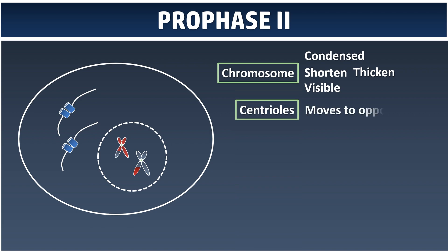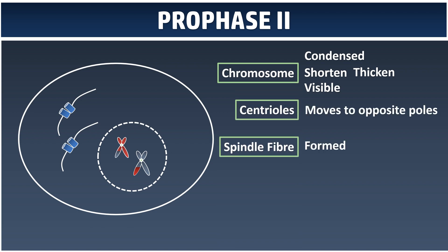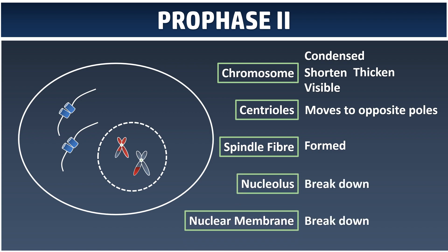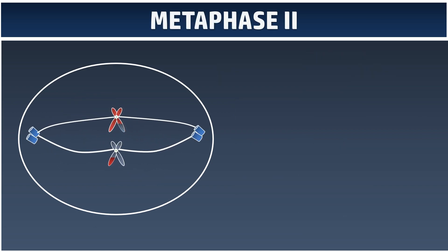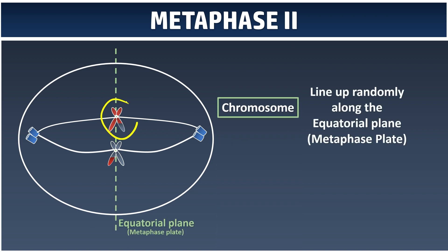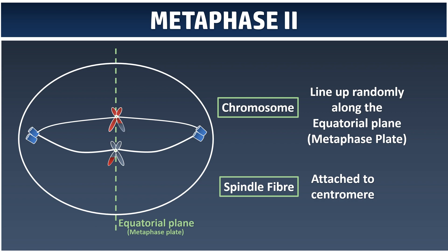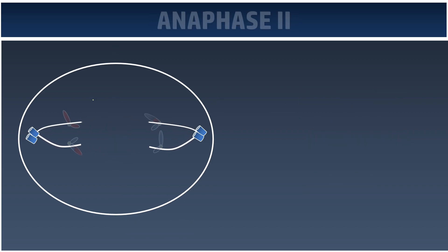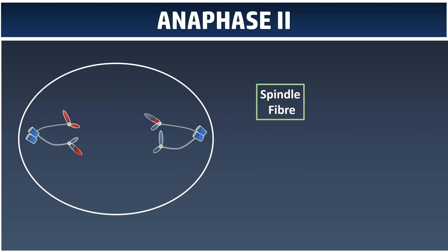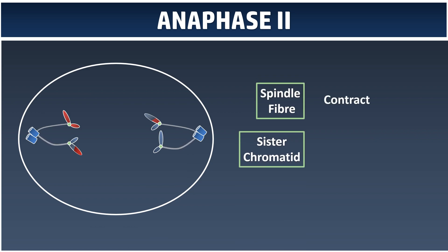Centrioles move to the opposite poles. As usual, spindle fiber is formed, and both the nucleus and nuclear membrane will break down and disappear. This is followed by Metaphase II, where the chromosomes line up at the metaphase plate. Now it is not a pair — it is not a tetrad — it is just individual chromosomes, which is basically just like mitosis. And when the spindle fiber contracts and pulls, the chromosome breaks into half to become sister chromatids, which are pulled towards the opposite poles.